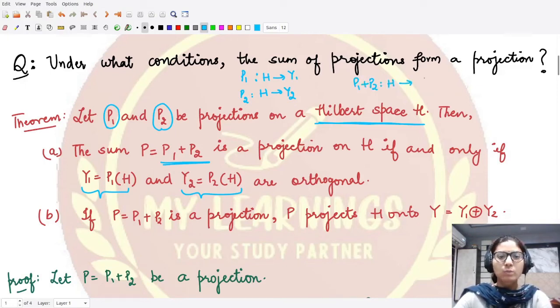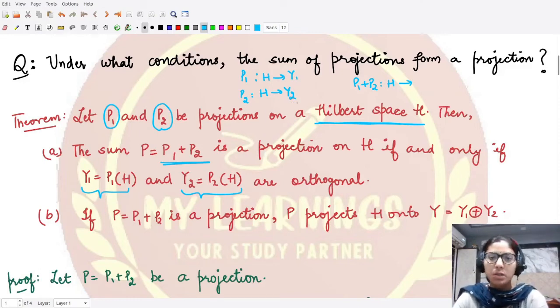From H to some space where both these spaces Y1 and Y2, they are orthogonal to each other. And moreover, what is this space? This is what the second part tells us.